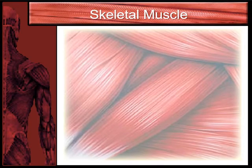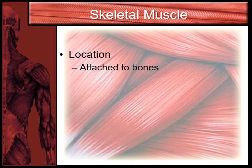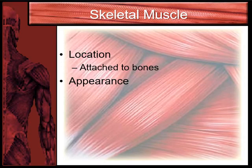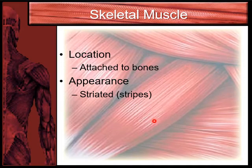Let's start with skeletal muscle. Skeletal muscle is exactly what it sounds like — it is going to be found attached to bones. For each muscle tissue type we're going to learn where you find it, the location, what kind of control it's under, some examples, and appearance. The appearance of skeletal muscle is that it is striated. If you look at the background of this slide, you can see there are long stripes on the muscle tissue.